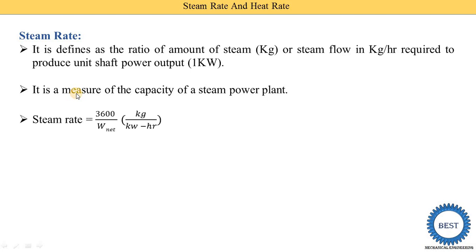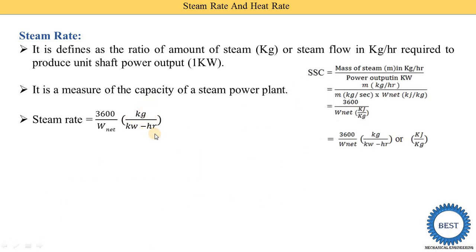The equation of steam rate is: steam rate equals 3600 divided by W_net, where W_net is the net work — that is turbine work minus pump work — and its unit is kilogram divided by kilowatt-hours.